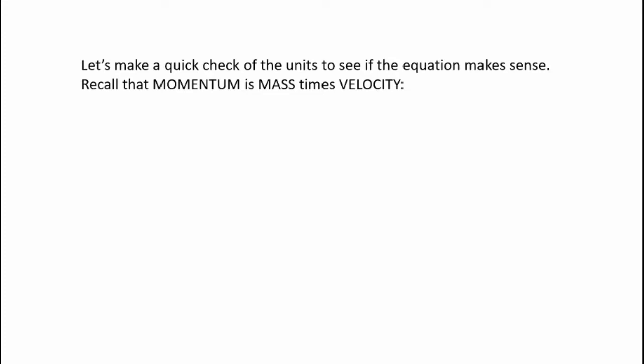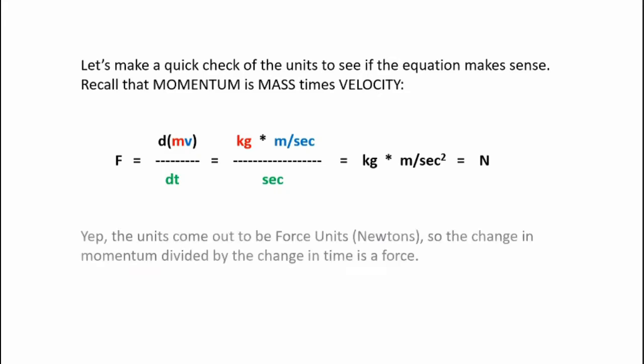Now let's make a quick check of the units to see if this equation makes sense. First of all recall momentum is mass times velocity. So we have our force equation which is dp over dt. We substitute in mv for the momentum p. So we have dmv divided by dt. We input units. We have kilograms times meters per second in the numerator, seconds in the denominator. If we do that math we get force units of newtons in the end. So we do get force units and so the change in momentum over the change in time is force.